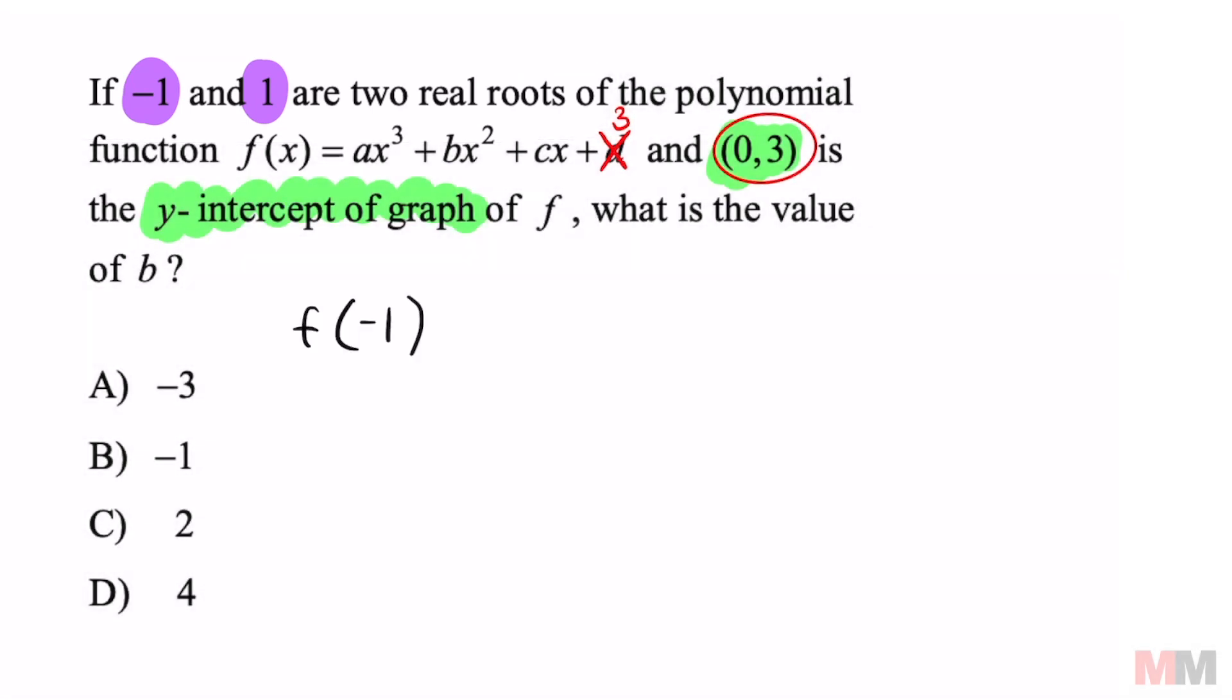Once again, if I plug in these roots into the function, all that means is that I'm replacing all my x values with my input negative 1. Then all of it at the end is going to equal 0. Similar thing is going to happen when I plug in that second root, except our input is 1 this time.